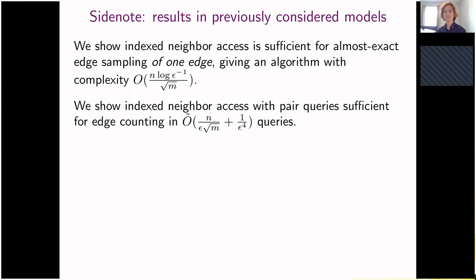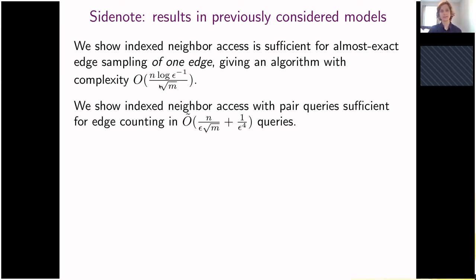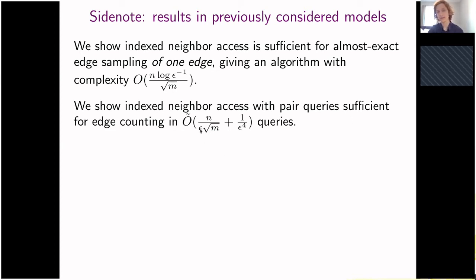As a quick side note, we also considered problems in settings previously studied. Namely, in the weaker index neighbor access model it is possible to get essentially the same results for edge sampling as in the hash ordered neighborhood access model, but only for sampling one edge — the dependence on epsilon is only logarithmic in that case. For sampling multiple edges we would get linear dependency on s instead of square root. We also show that techniques we develop for estimating the number of edges in the hash ordered neighborhood access setting can be used to give more efficient algorithms for counting edges in the weaker index neighbor access model with pair queries, again reducing the dependence on epsilon from quadratic to linear in the main term.